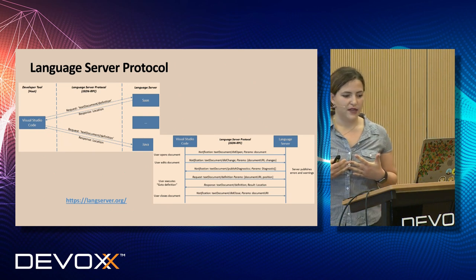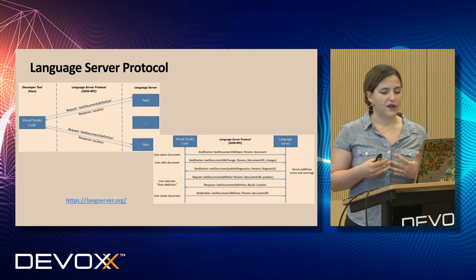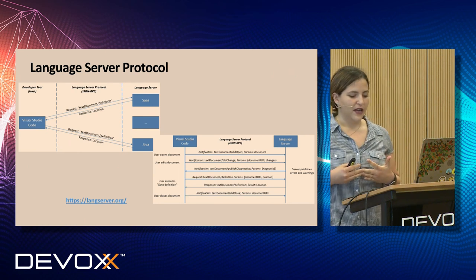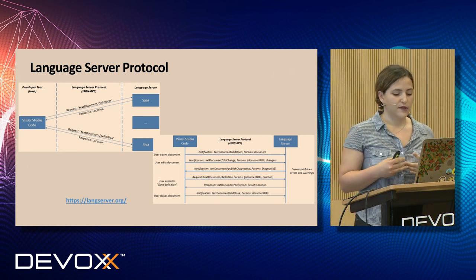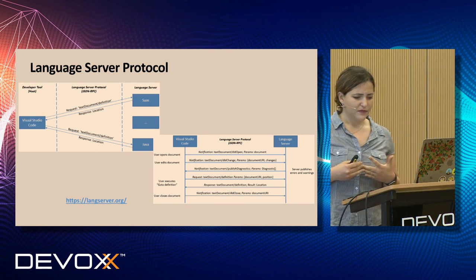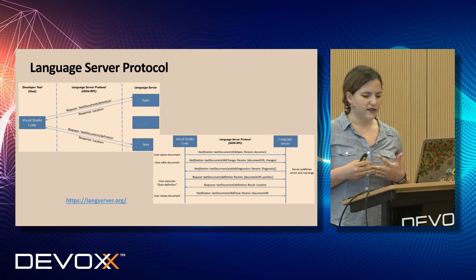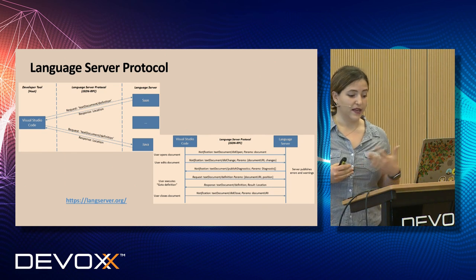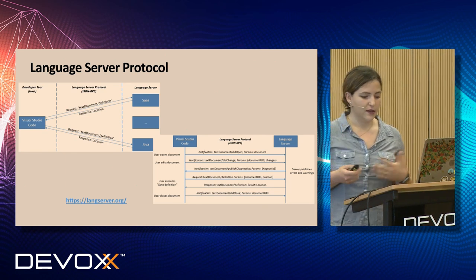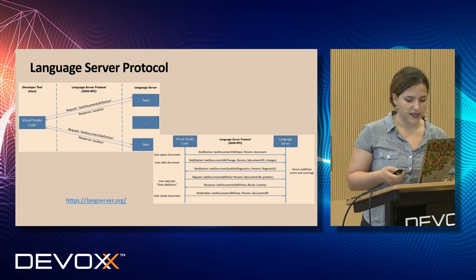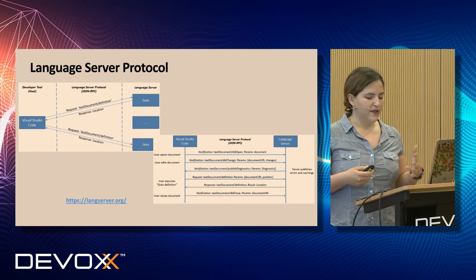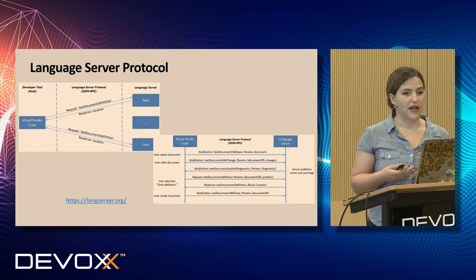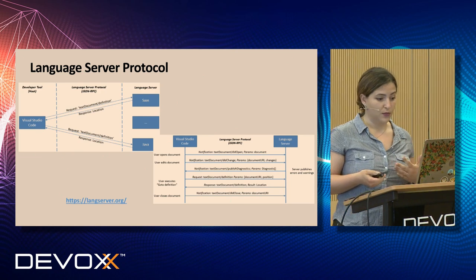The Language Server Protocol was created by Microsoft to define a common language for programming language analysis tools to communicate. Today a lot of companies use and support it — it's open source, supported by Codenv, Red Hat, and Sourcegraph, and it's growing rapidly. It's also used by Eclipse — you can see it under the hood. There's a lot of details, and it's always evolving with more languages and more support being added.